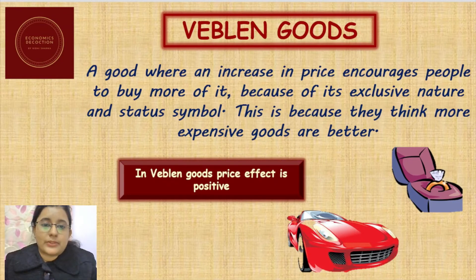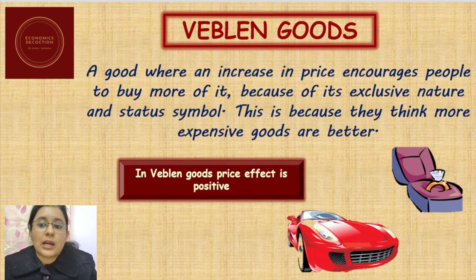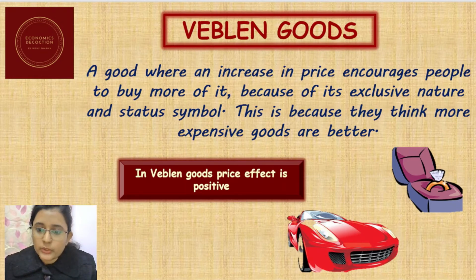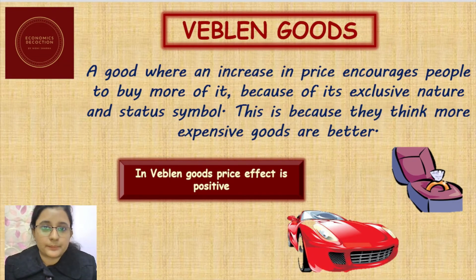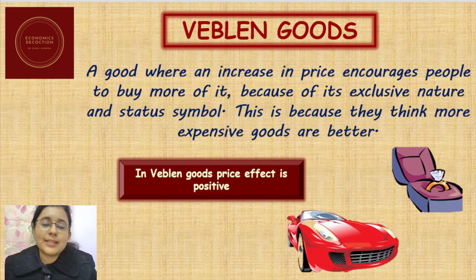Now comes the concept of Veblen goods. A good where an increase in price encourages people to buy more of it, because of its exclusive nature and status symbol, is considered a Veblen good. Very expensive cars and diamond rings are considered Veblen goods because the owner wants to own these goods due to their exclusive nature and status symbol. An owner of a very expensive car would be considered as belonging to a very high income group. Consumers think that the more expensive a good is, the better the quality.